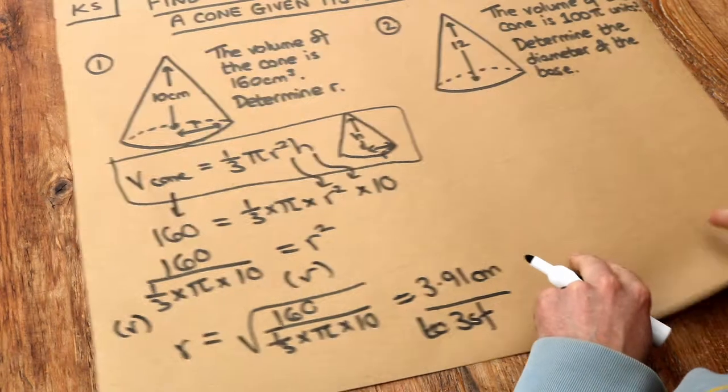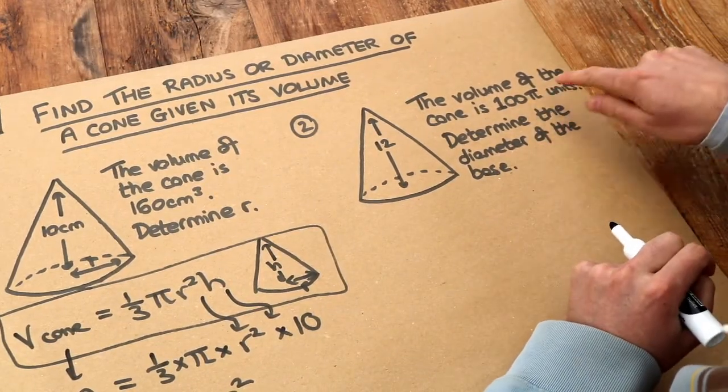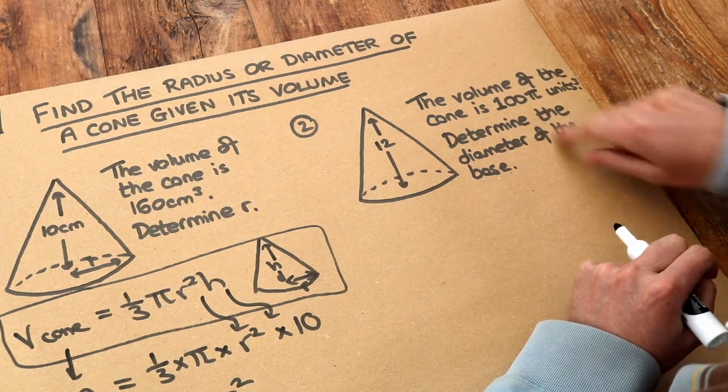What about the next one? The interesting thing here is that the volume actually has a pi in it, and when the question does that, typically that pi will cancel in your equation.